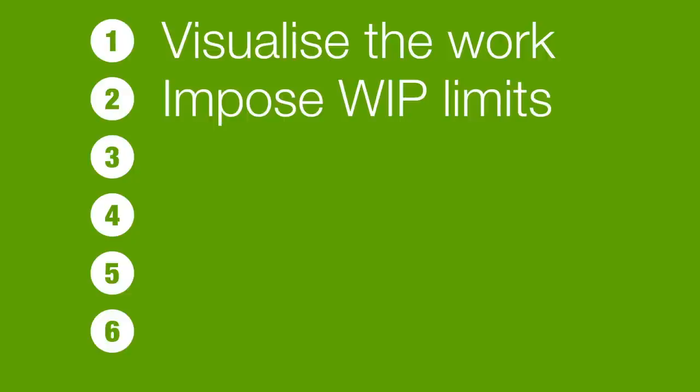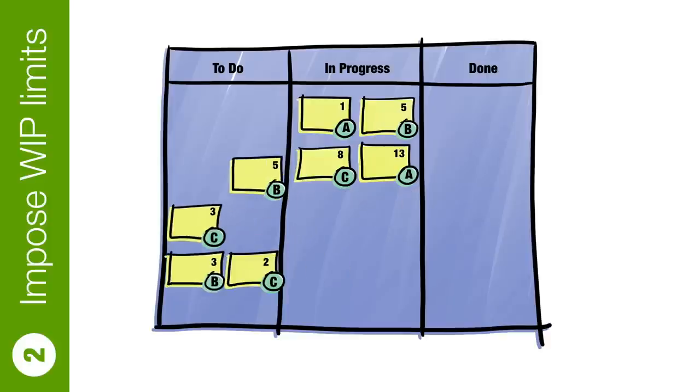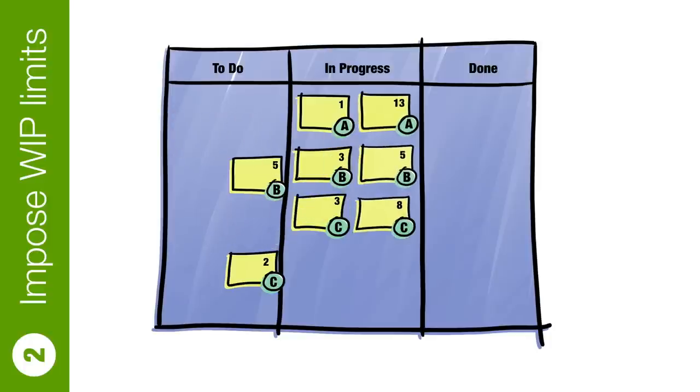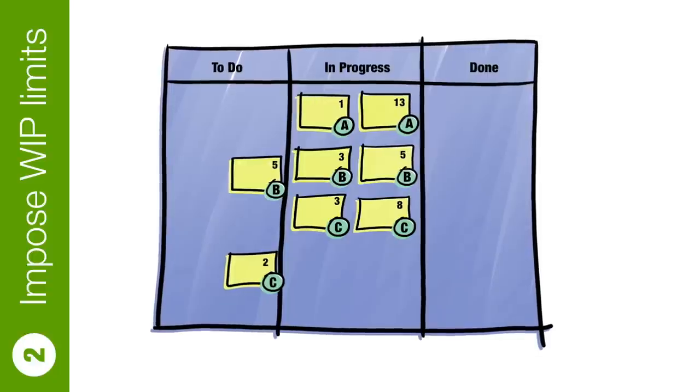Step two: impose work-in-progress limits. If you know anything at all about Kanban you'll know that one of the things it does is impose work-in-progress limits. I'm going to rewind to the beginning — and this time each developer is allowed to work on a maximum of two tickets at any one time. Ideally it would be just one ticket, but we know that things happen and tickets can get blocked, so we're giving people just a little bit of leeway. Fast forward a couple of days and it seems all three developers are working on exactly two tickets. They've stayed within the letter of the law, but the spirit of the law? Not so much.